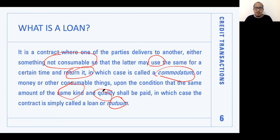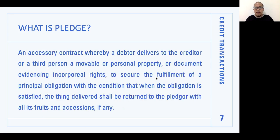Since there is an expectation of return — whether it is a borrowed item or a loan — how do you ensure the creditor will get it back? The creditor needs peace of mind that what was lent will be returned or paid. So we have credit transactions here to provide that security. First, we have pledge. Then we have mortgage. And mortgage has two types: real estate mortgage and chattel mortgage.